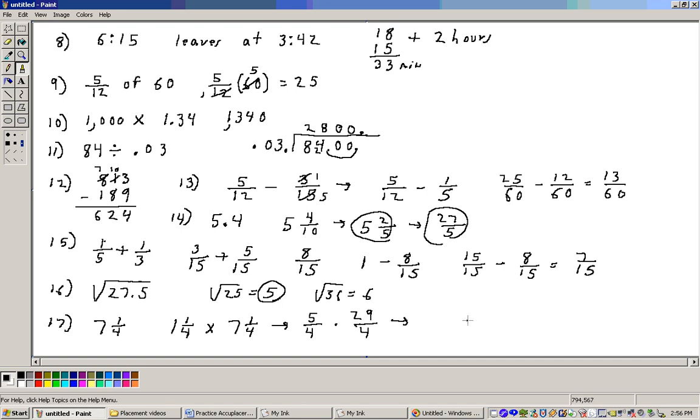And that gives me on the bottom here, four times four, well, nothing reduces here. So four times four is 16, and on the top, just take 29 times five, and that's 45.